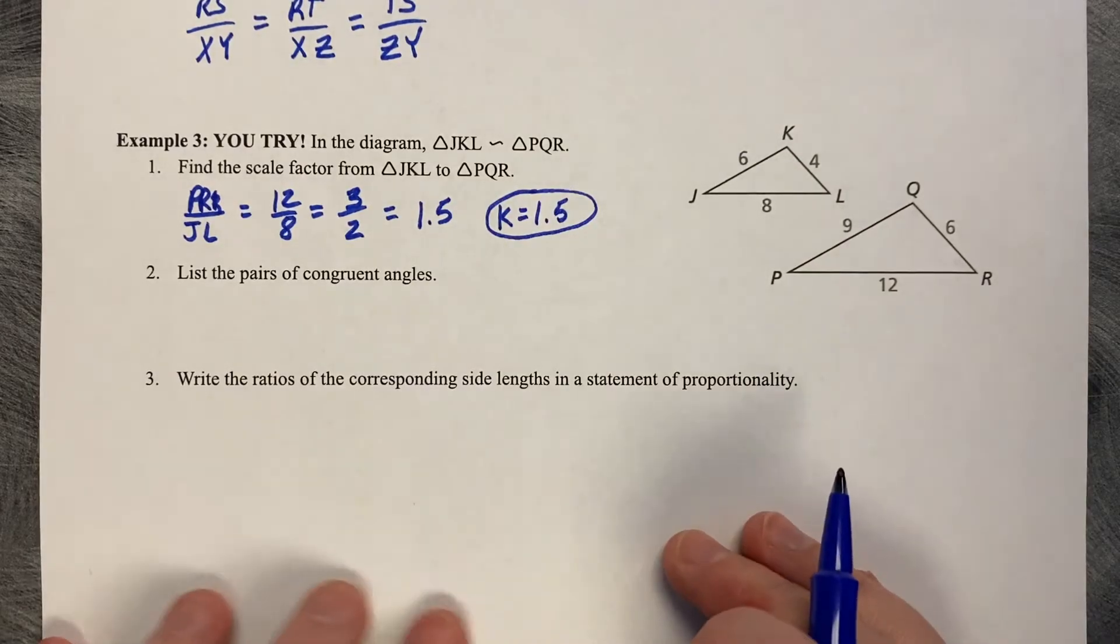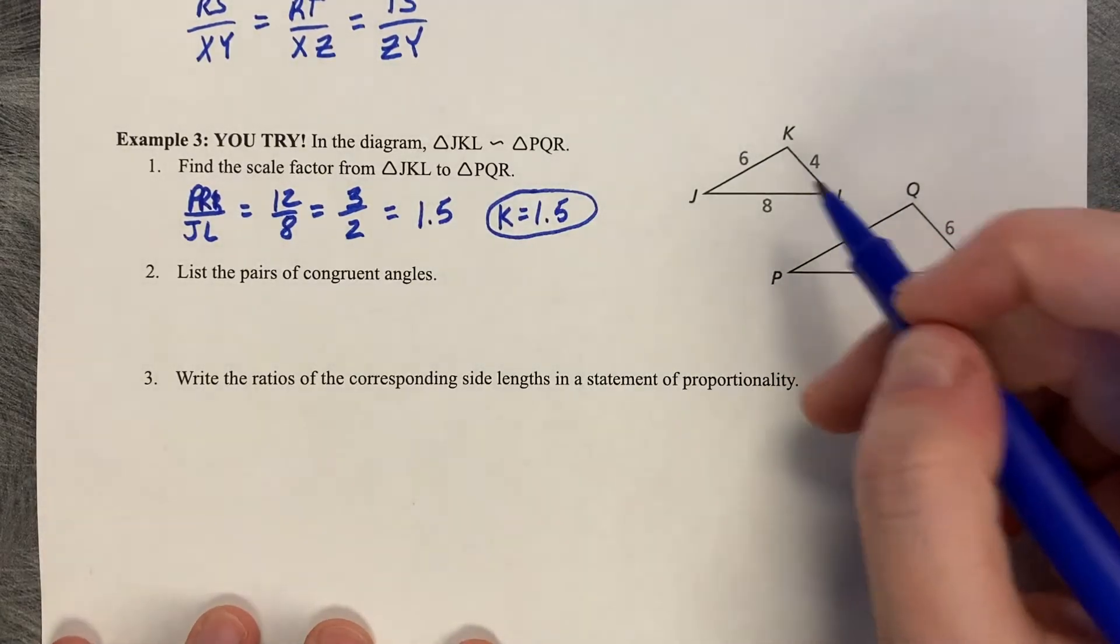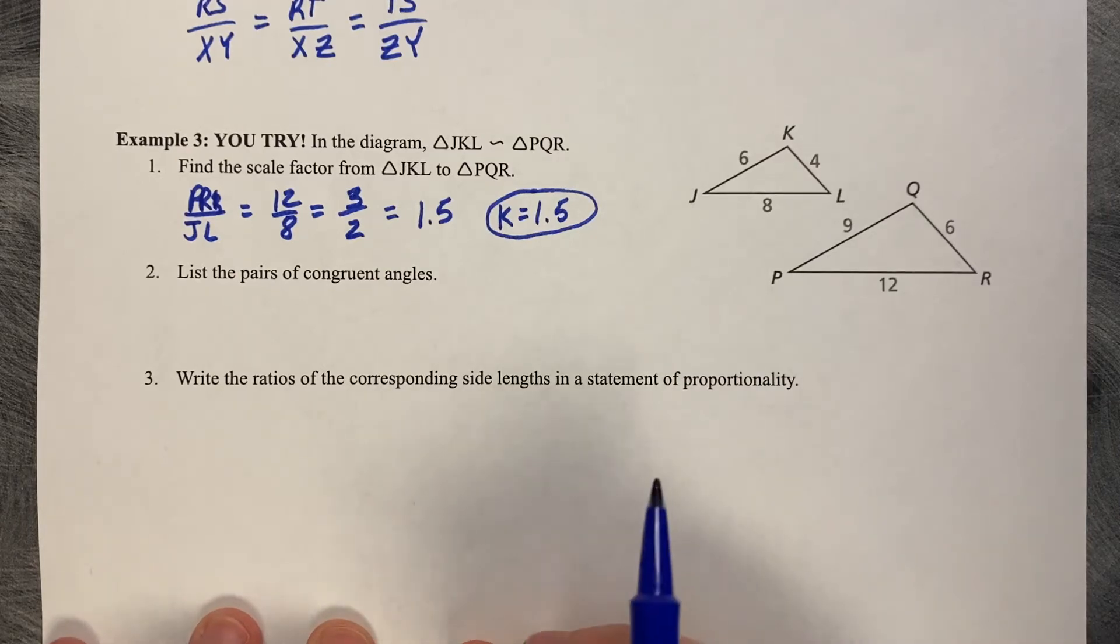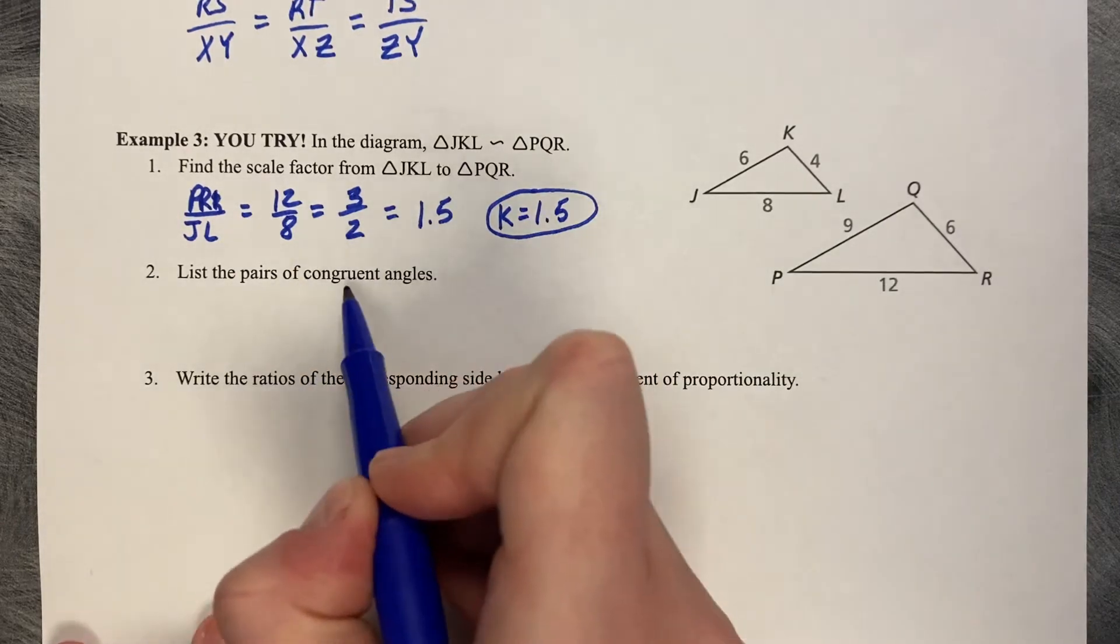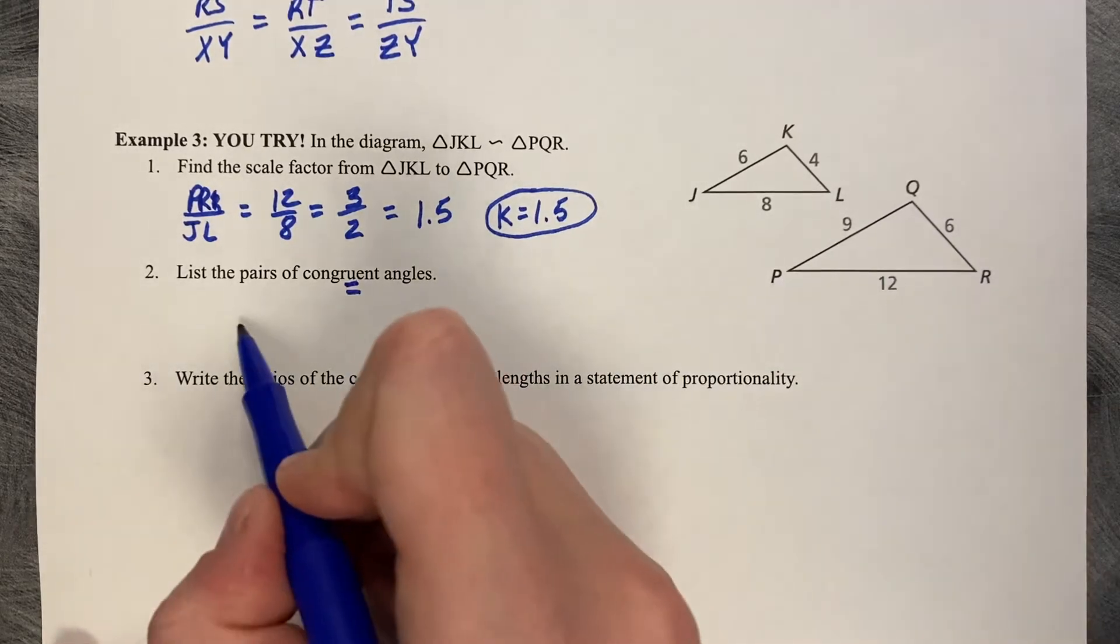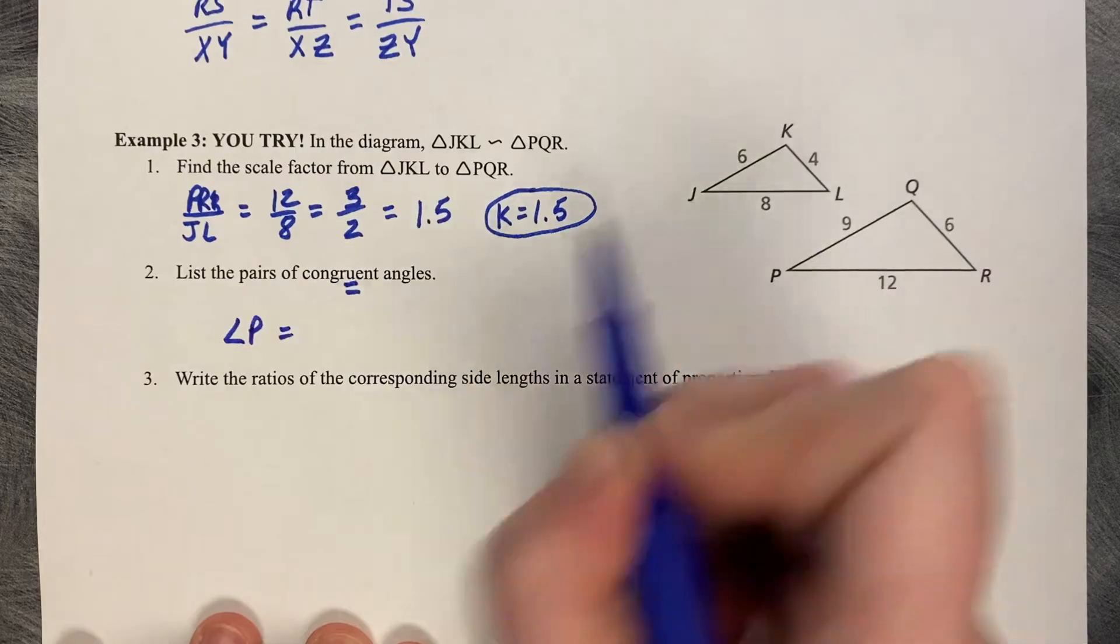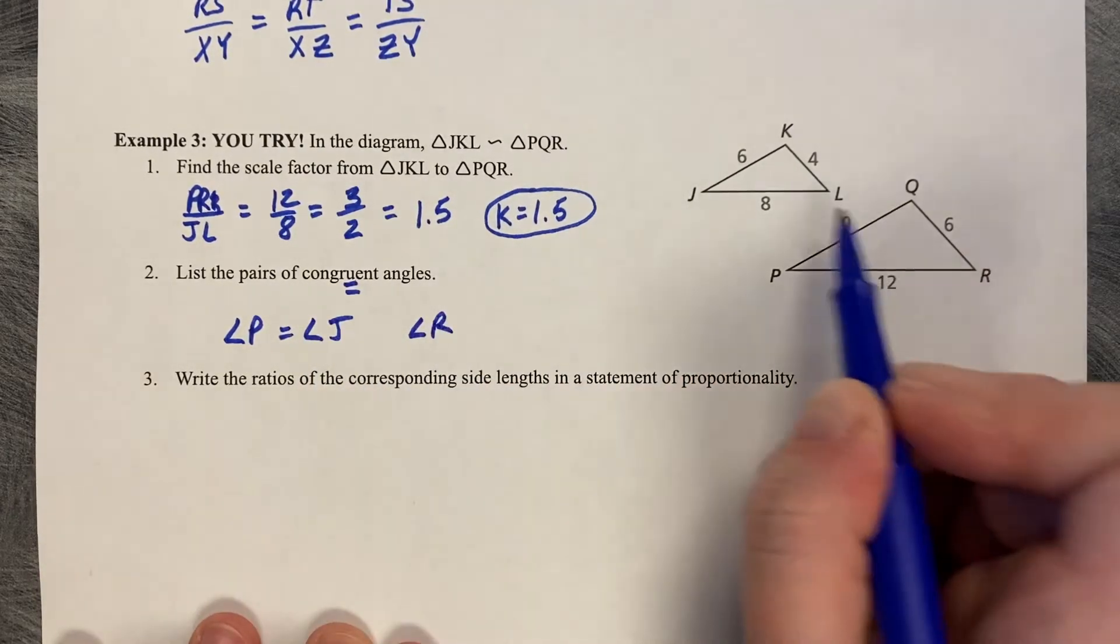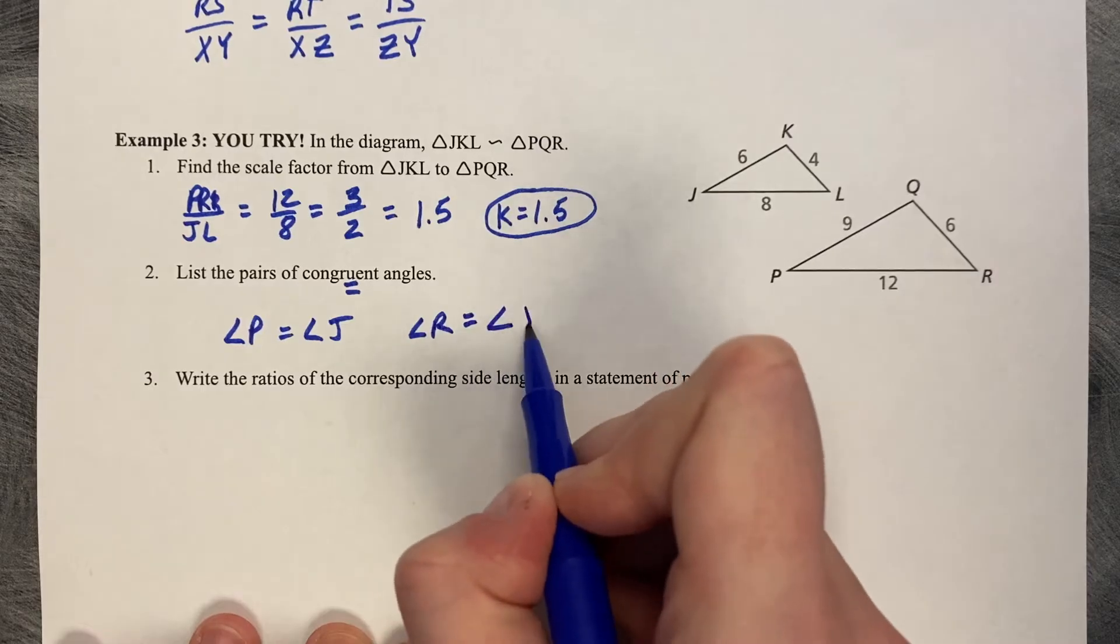List the pairs of congruent angles. So when you increase and decrease triangles in size, it does not change their angles. So they remain equal, actually equal. So let's do corresponding for P. Angle P is equal to angle J.